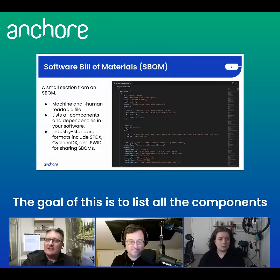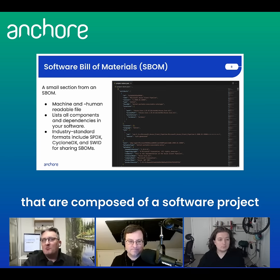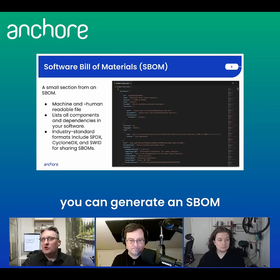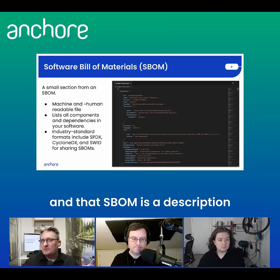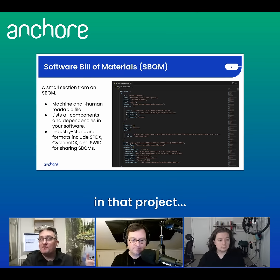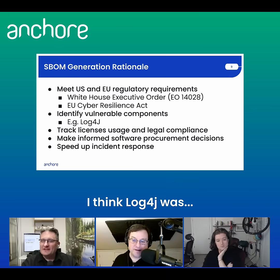Software Bill of Materials, the SBOM. The goal of this is to list all the components, all the bits of software that are composed of a software project. Anywhere that there's a pile of software that you're using, you can generate an SBOM. That SBOM is a description of all the things that are in that directory, in that project, in that Git repo, or in that container.